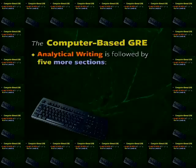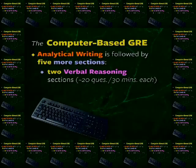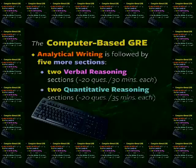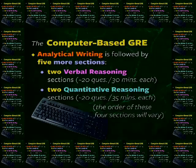This is followed by five more sections. Two sections are devoted to verbal reasoning, each including around 20 questions to be answered in 30 minutes. Two sections are devoted to quantitative reasoning, each containing about 20 questions to be answered in 35 minutes. The order of these four sections will vary from one test to another.